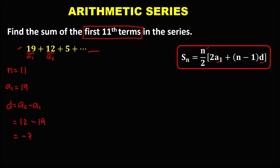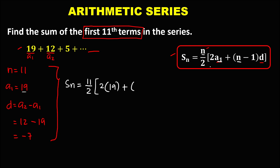Since we now have all the values, we can find the sum of this arithmetic series using this formula. So the sum equals n, and n is 11, over 2, times 2 times a sub 1 — a sub 1 is 19 — then plus n minus 1 times the common difference, which is negative 7.